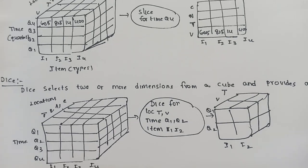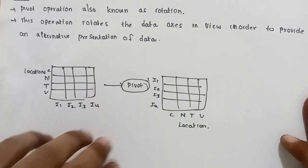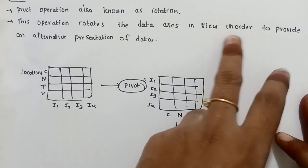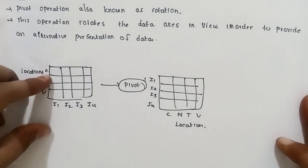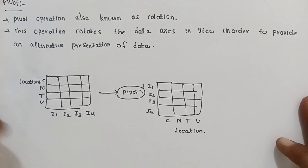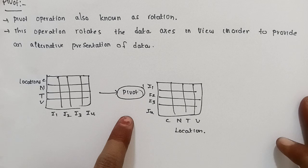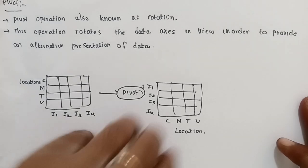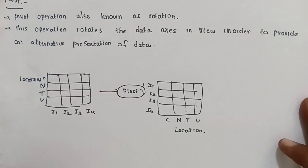The last operation is Pivot. Pivot operation is also known as rotation. This operation rotates the data axes in the viewer in order to provide an alternative representation of the data. So the way of representation is changed by rotating the data axis. Pivot is nothing but rotation.